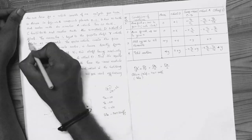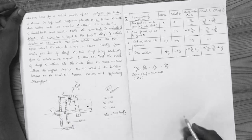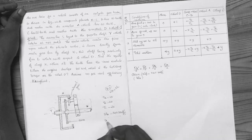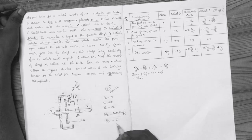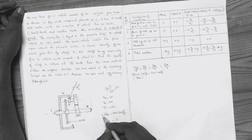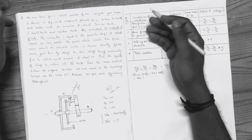Sun wheel D is fixed. Therefore Omega_D equals zero.